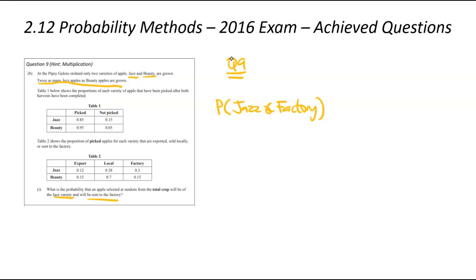We go event one times event two times event three, and so on. In this case here, I want us to think about, what events have to happen for this jazz apple to go to a factory? Firstly, it has to be a jazz apple. So we need to find, what's the probability of the apple being jazz? Don't forget, it could be that beauty apple. It's a jazz apple. We then have to figure out, for it to end up in the factory, it has to be picked. If it's not picked, it ain't going there.